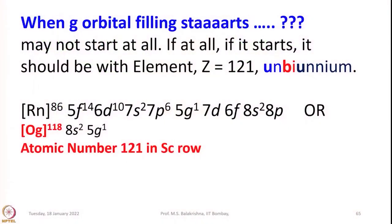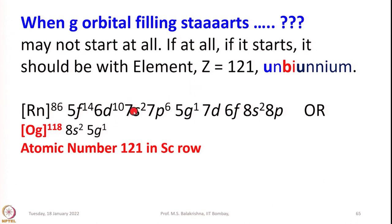According to IUPAC, atomic number 121 is named unbiunium. Its electron configuration can be written starting from radon (atomic number 86): 5f¹⁴, 6d¹⁰, 7s², 7p⁶, 5g¹ — or from Oganesson 118: 8s², 5g¹. That means if an element with atomic number 121 is discovered, it will be placed below scandium, having one electron in the G-orbital.